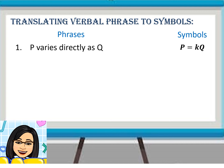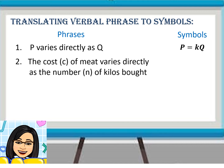How will you translate this: 'The cost of meat varies directly as the number of kilos bought'? We will use C for the cost of meat and N for the number of kilos bought. So, we can write this as C is equal to KN, where K is the constant of variation.